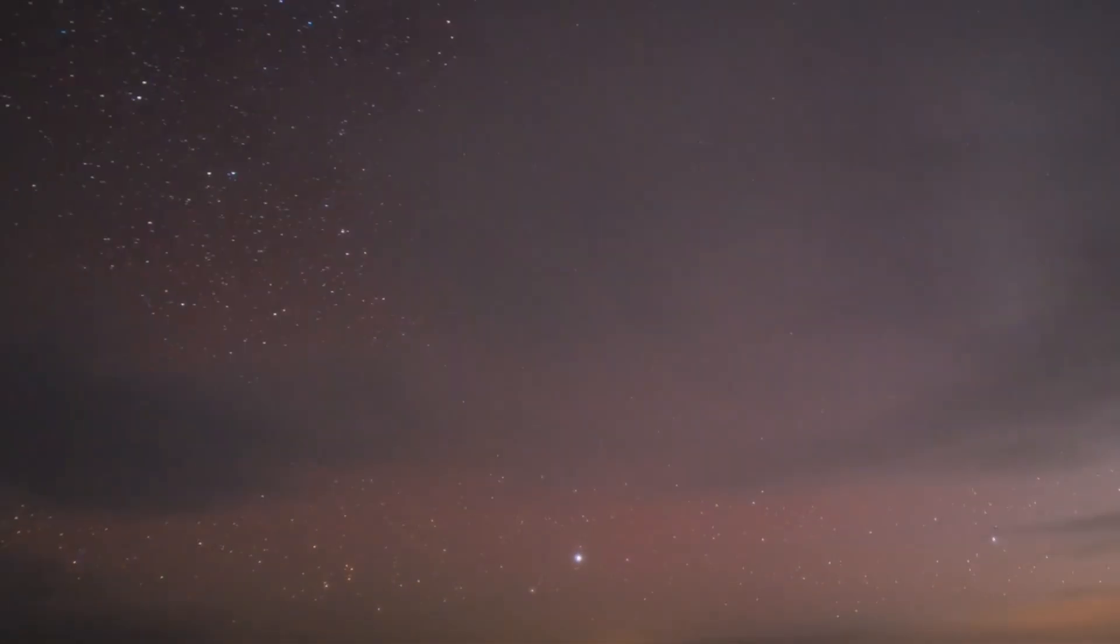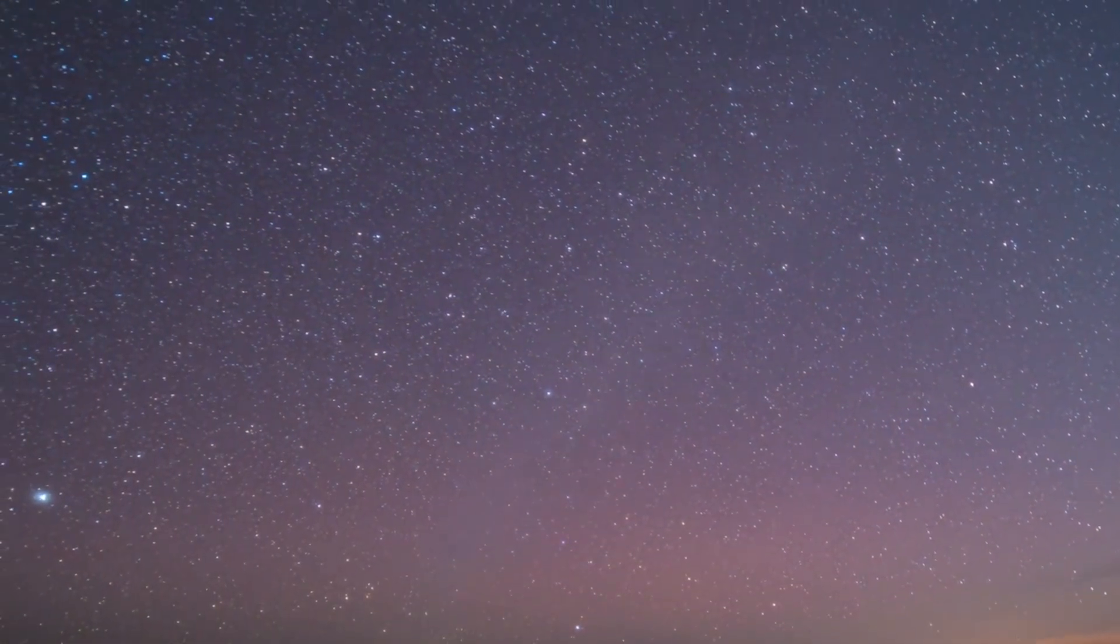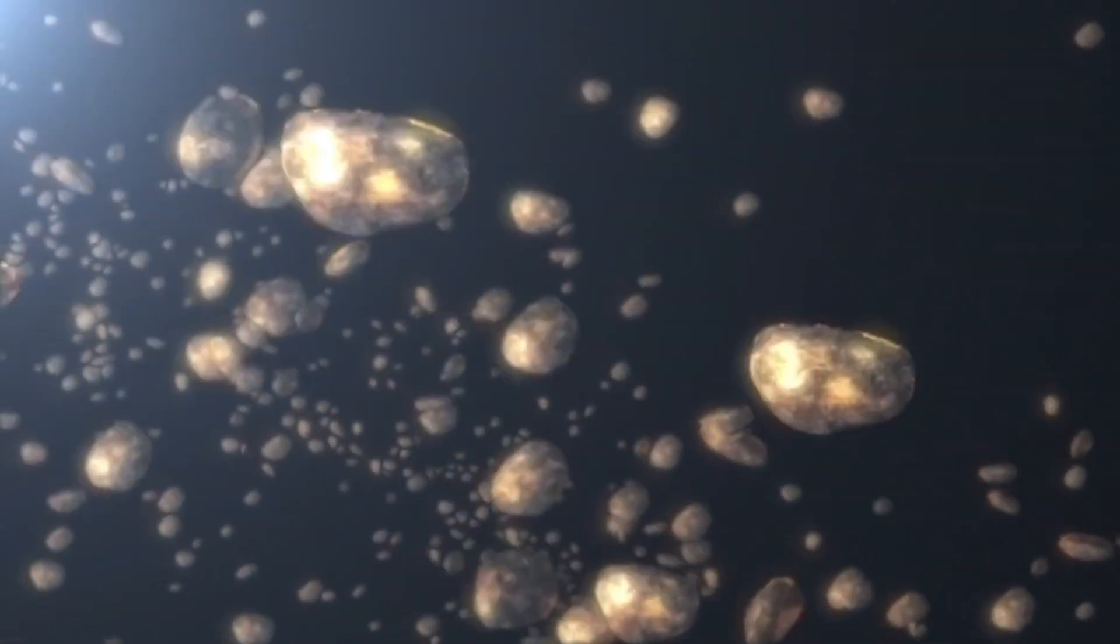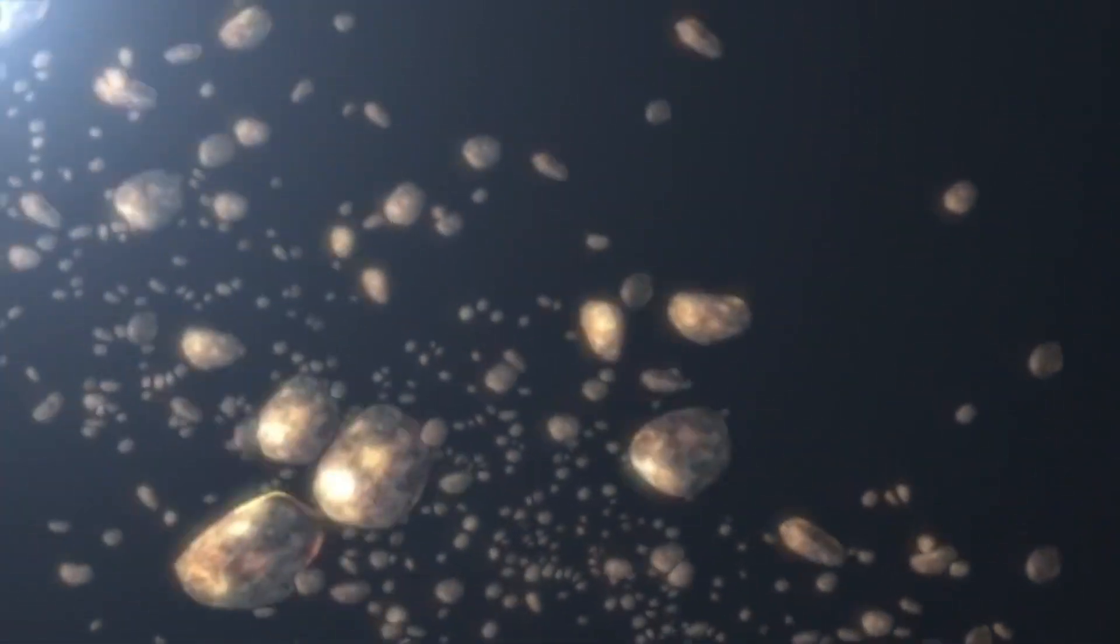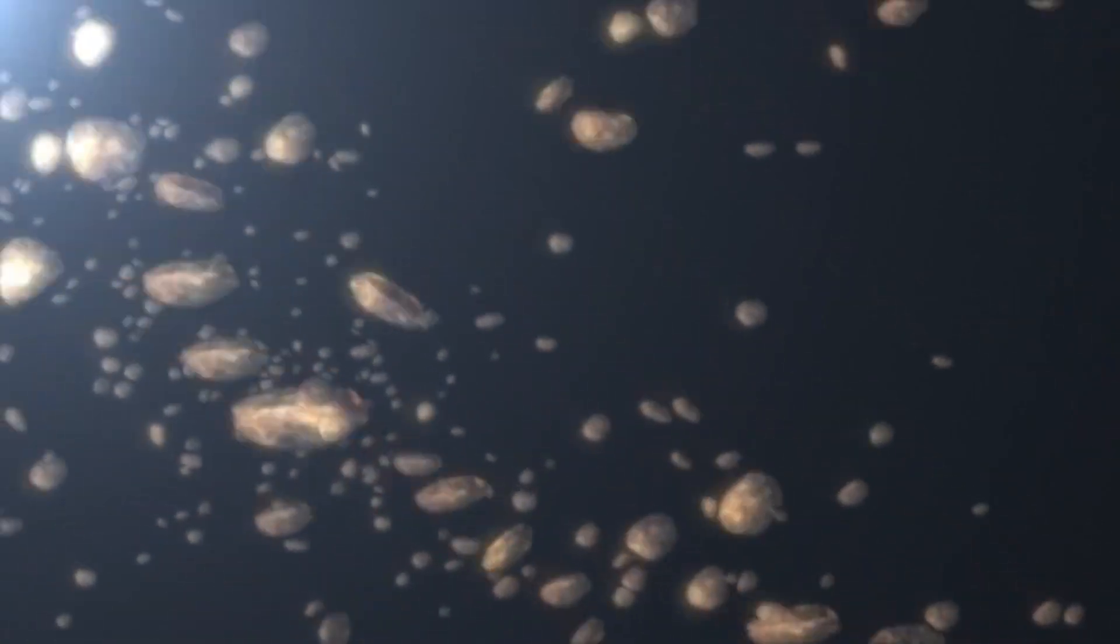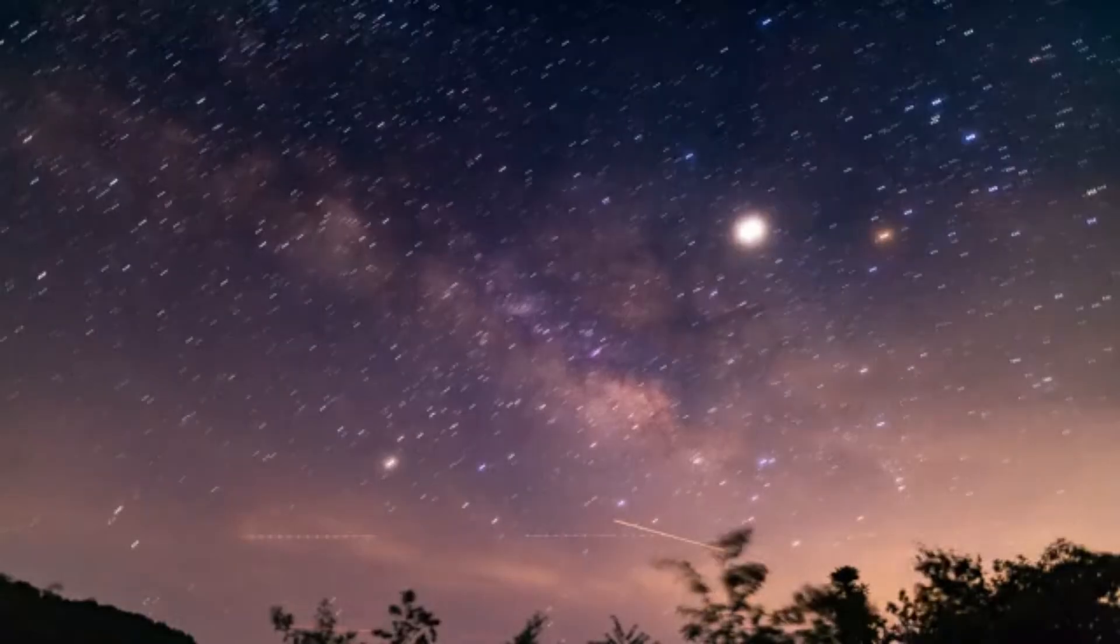This high velocity has led to the hypothesis that Oumuamua might have originated from a binary star system. The theory suggests that gravitational interactions within binary star systems can release objects at high speeds. If Oumuamua did indeed originate from such a system, it is conceivable that the gravitational forces exerted by the stars pushed it on its interstellar journey, representing its striking velocity.